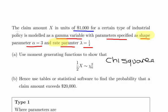So chi-squared degrees of freedom equals 6, so that's 1/2 of X equals that. Use tables or statistical software to find the probability that a claim amount exceeds $20,000. So that's the probability that X is greater than or equal to 20. Remember we're dealing in units of 1000.